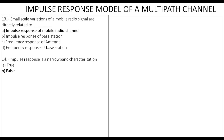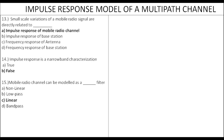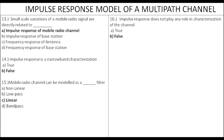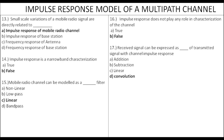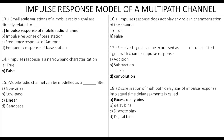A mobile radio channel can be modeled as a linear filter with a time-varying impulse response. The received signal y(t) is the convolution of the transmitted signal x(t) with the channel impulse response. This plays a role in channel characterization — saying it does not play any role is false.